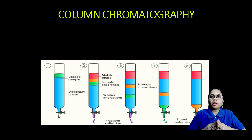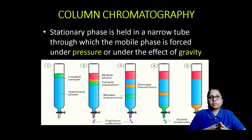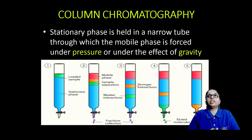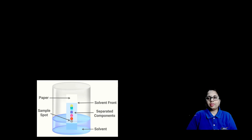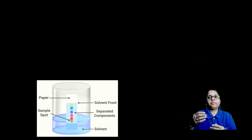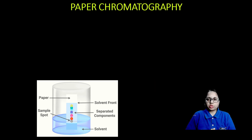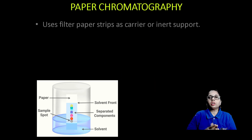In column chromatography, the stationary phase is held in a narrow tube through which the mobile phase is passed through a column. Different solvents are used for eluting the compounds.